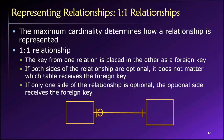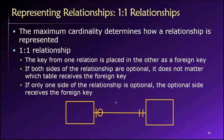However, if we have a design where the minimum cardinality is zero on one side of the relationship — so it's optional here — and the minimum cardinality is one on the other side — so it's required here — then in this case we always put the foreign key in the table that has a zero for the minimum cardinality. Let's look at this from a data perspective to understand why.